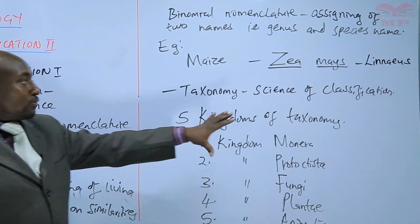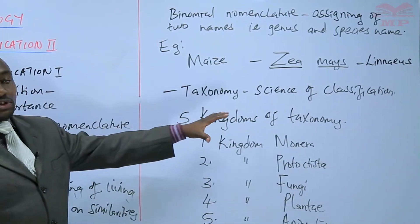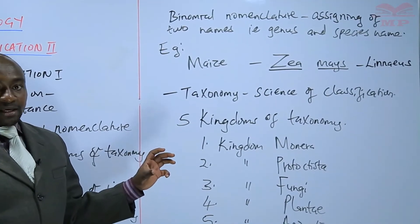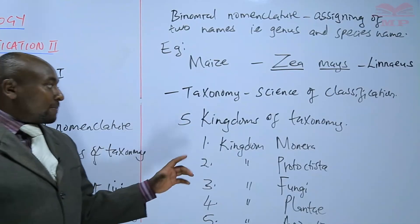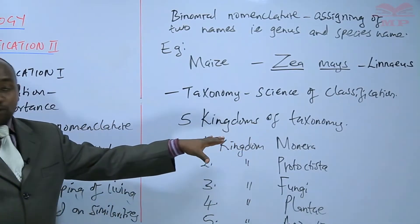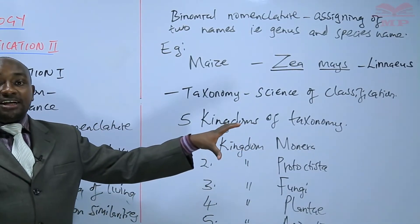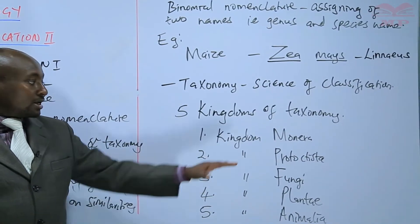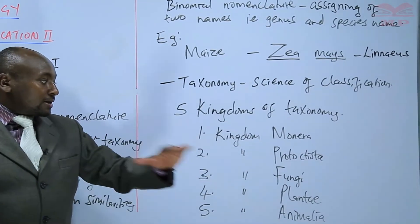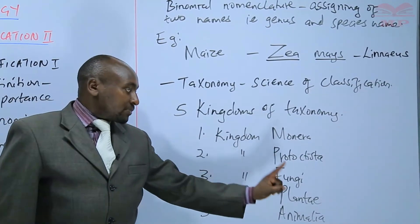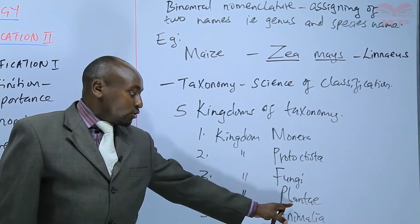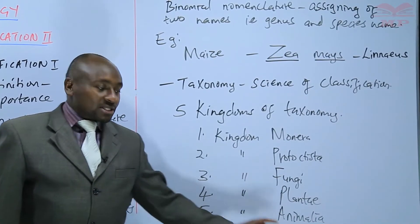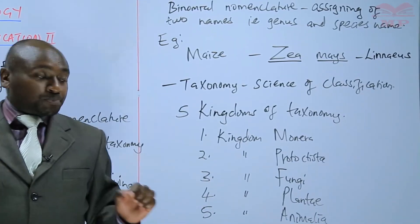We have also gone through the science of classification, which we defined as taxonomy. Taxonomy entails dividing organisms into five kingdoms: kingdom Monera, kingdom Protocytista, kingdom Fungi, kingdom Plantae, and kingdom Animalia. Those are the five kingdoms.